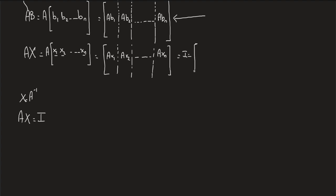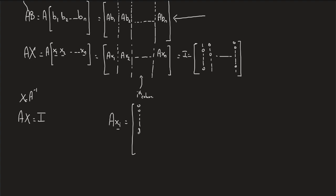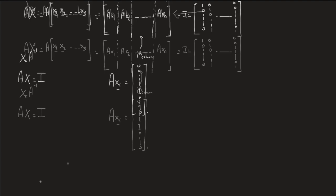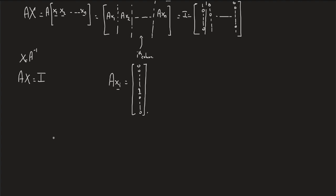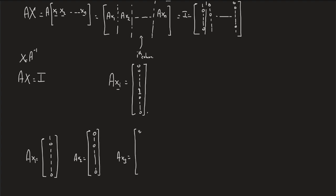The identity matrix has ones on the diagonal and zeros everywhere else. So if I'm solving for the i-th column AXi, then AXi should be all zeros except for a one in its i-th entry. That means AX1 equals [1, 0, 0, ...], AX2 equals [0, 1, 0, ...], AX3 equals [0, 0, 1, ...], and so on down to AXn, which is all zeros except one in its last entry.